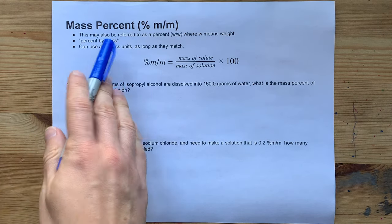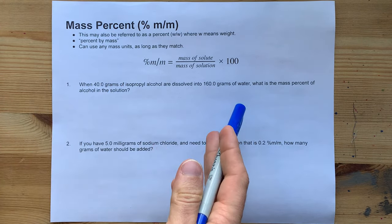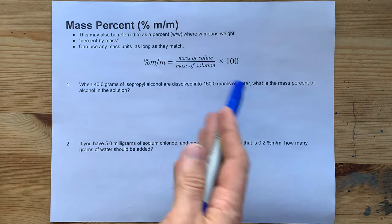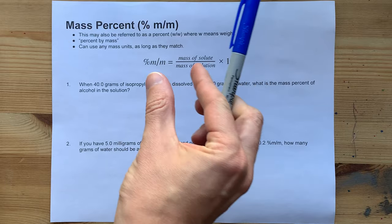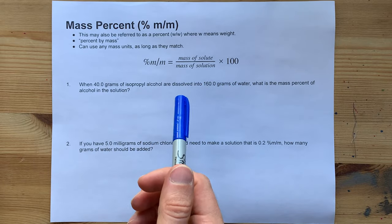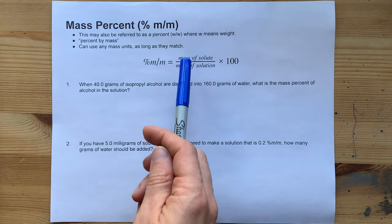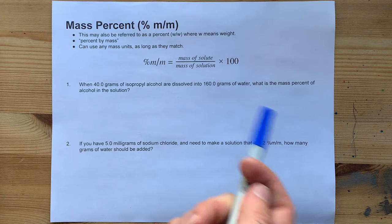Mass percent is a way to measure concentration in solutions. It is the fraction of the mass of the whole solution that is made up of that particular solute. The units of mass that you use don't matter as long as they are both the same.